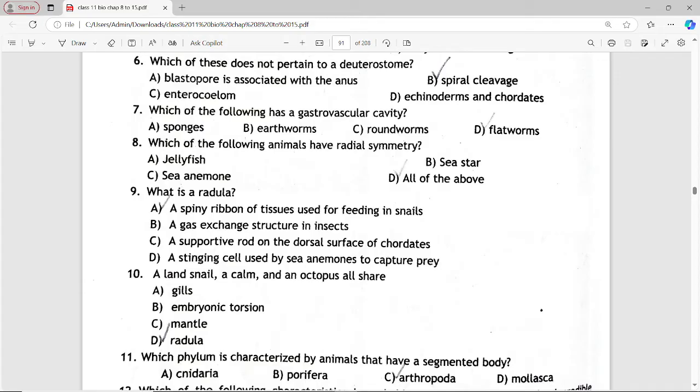Next is: which of the following animals have radial symmetry? Options are jellyfish, sea star, sea anemone, all of these. Answer is option D, all of these.